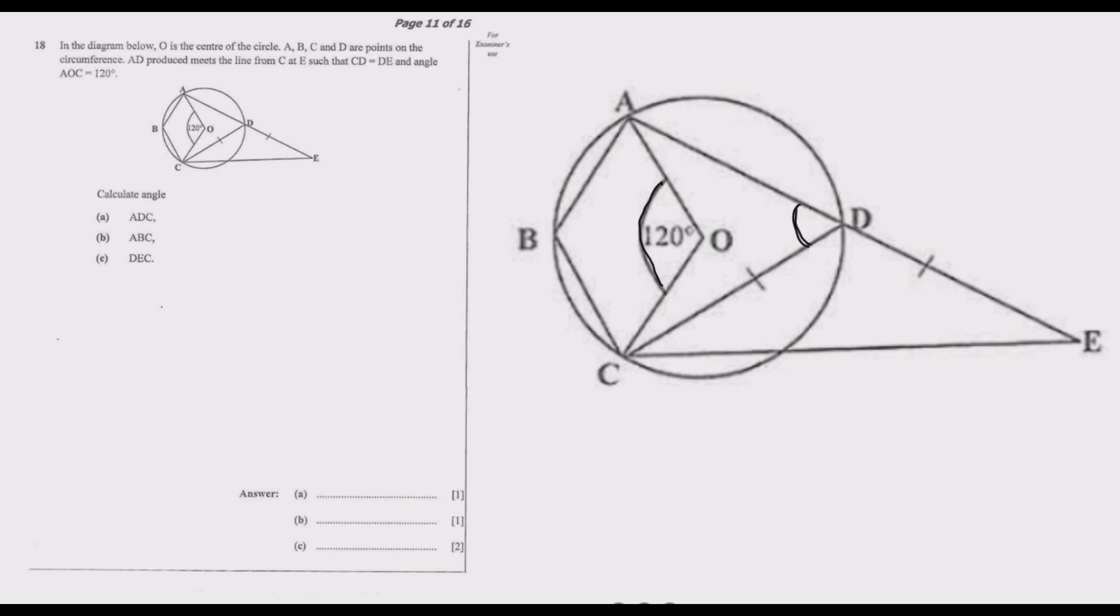So in this case, this is 60. Then what we know is this is a straight line, and a straight line adds up to 180. So if we know this angle, which is 60, then what remains is basically 180 minus 60, so this is 120 degrees.